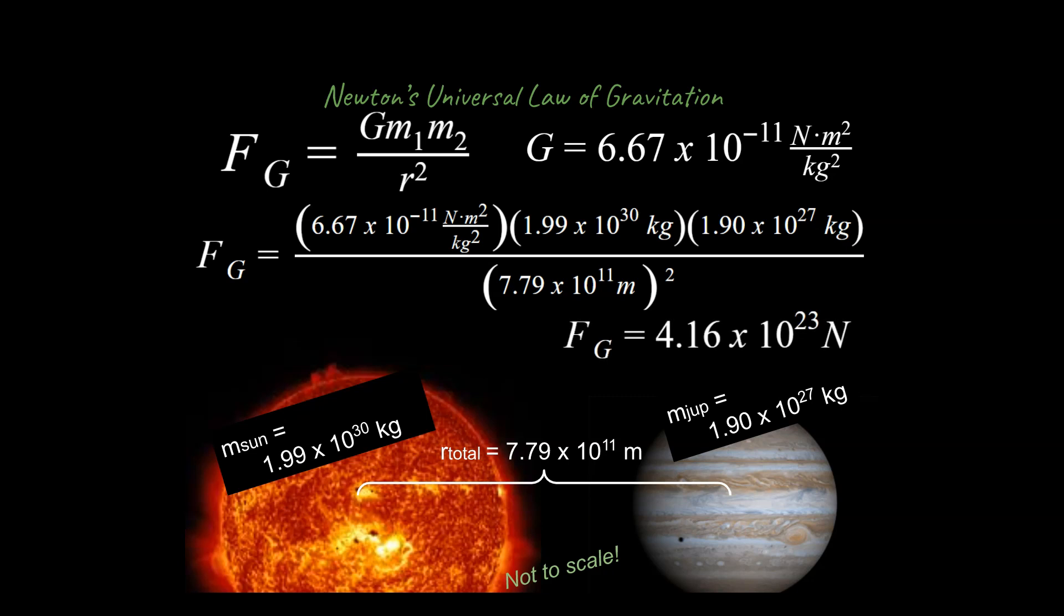So if you do the math correctly, you end up with this answer over here. That's the force due to gravity between the Sun and Jupiter, which is a very large number. And we would expect to get a very large number if you're talking about the gravitational force between something like the Sun and Jupiter.